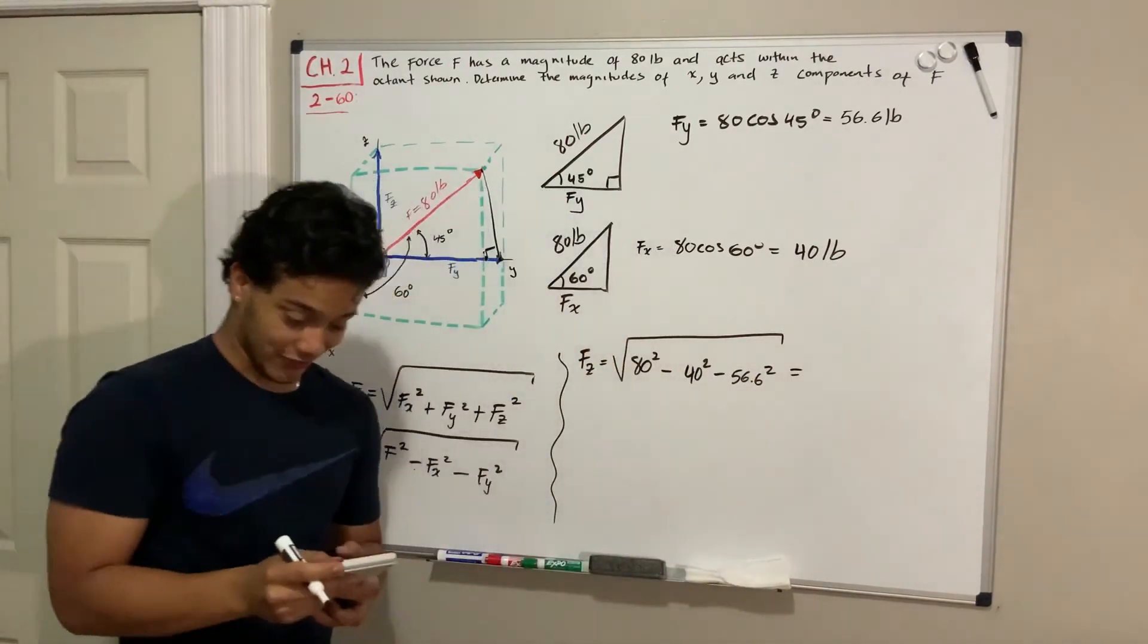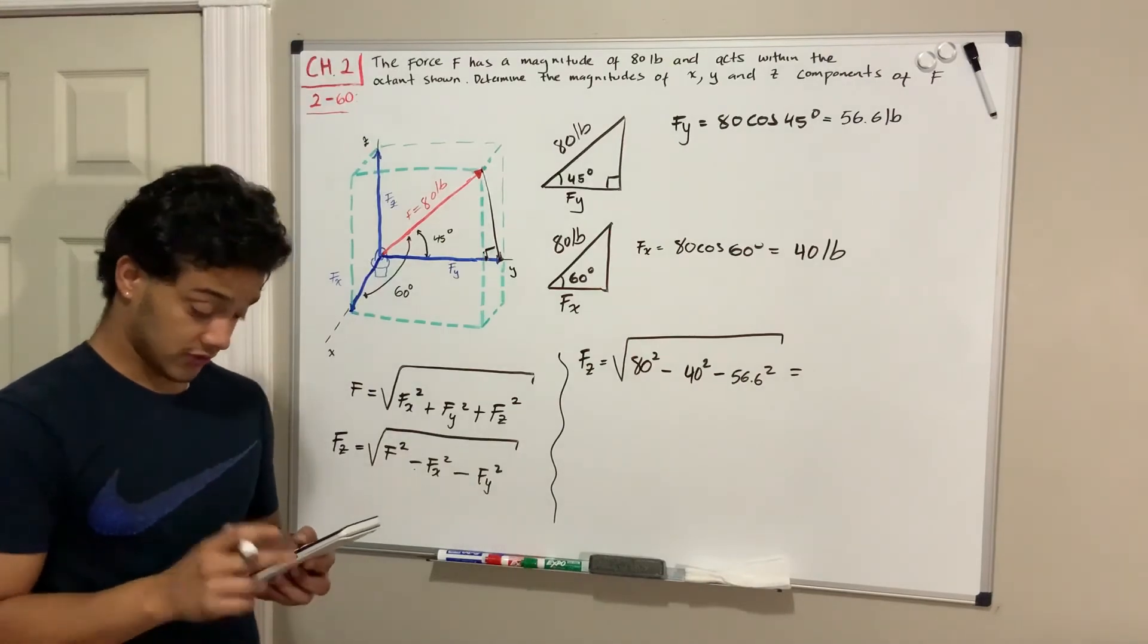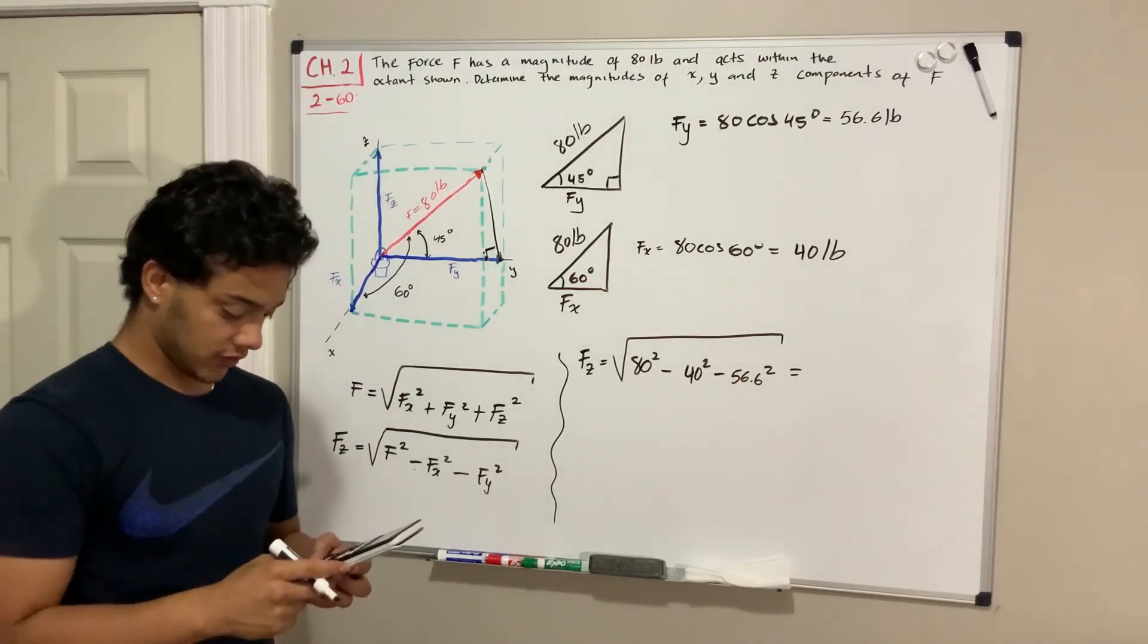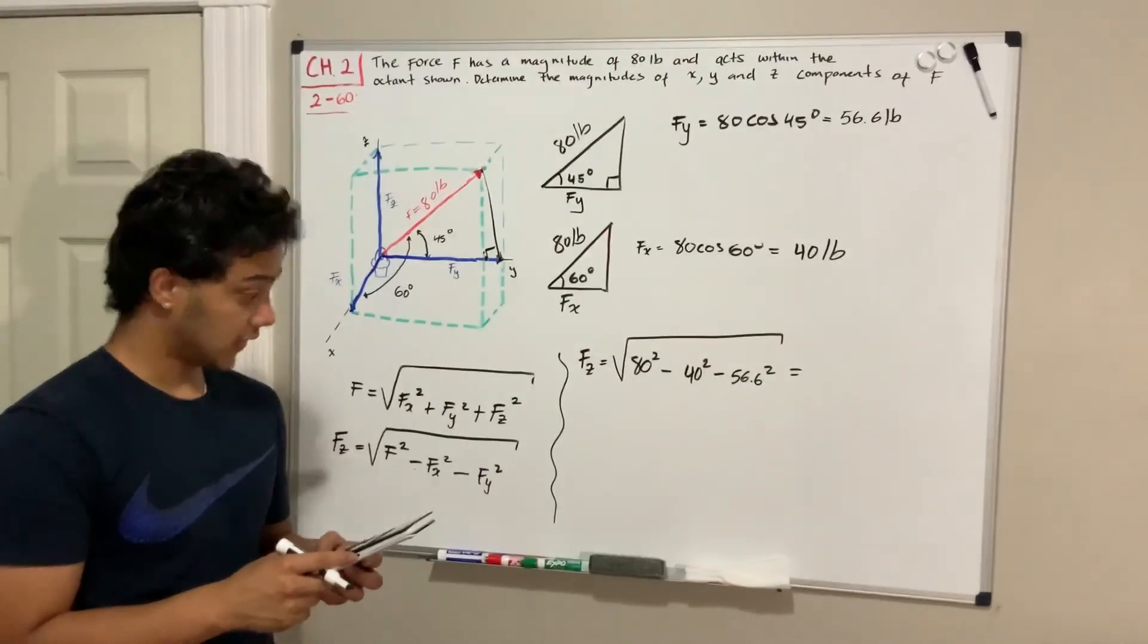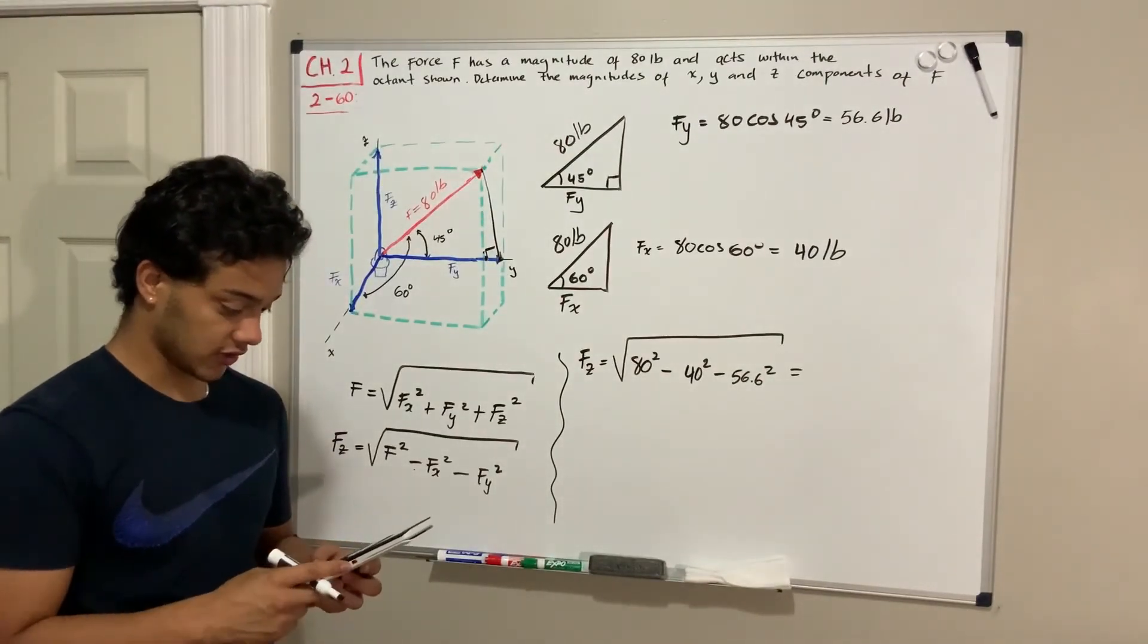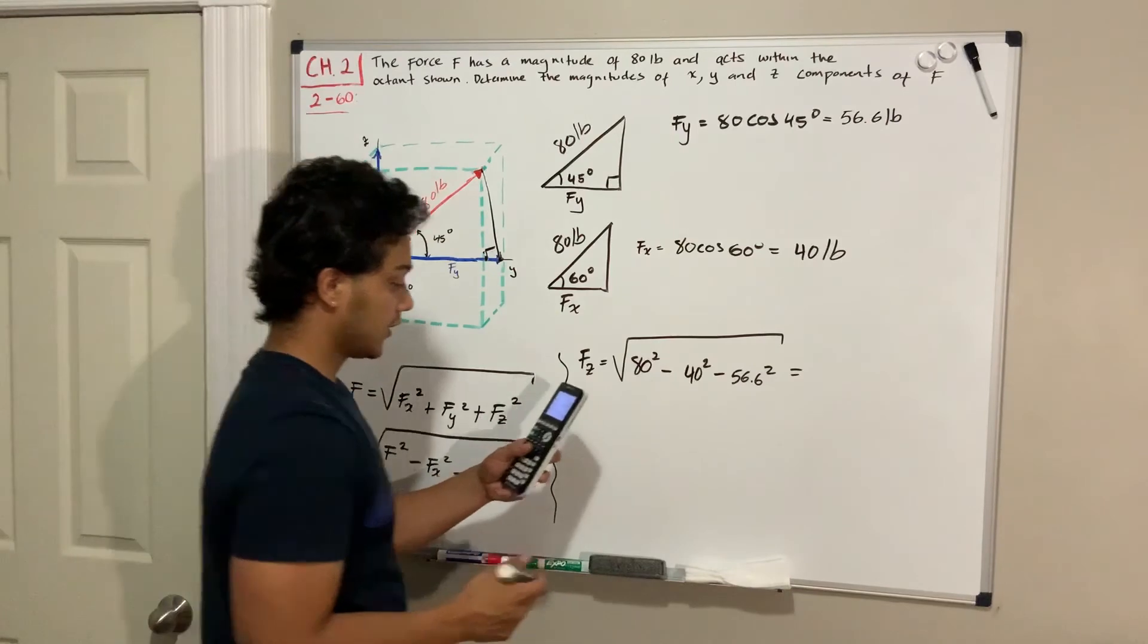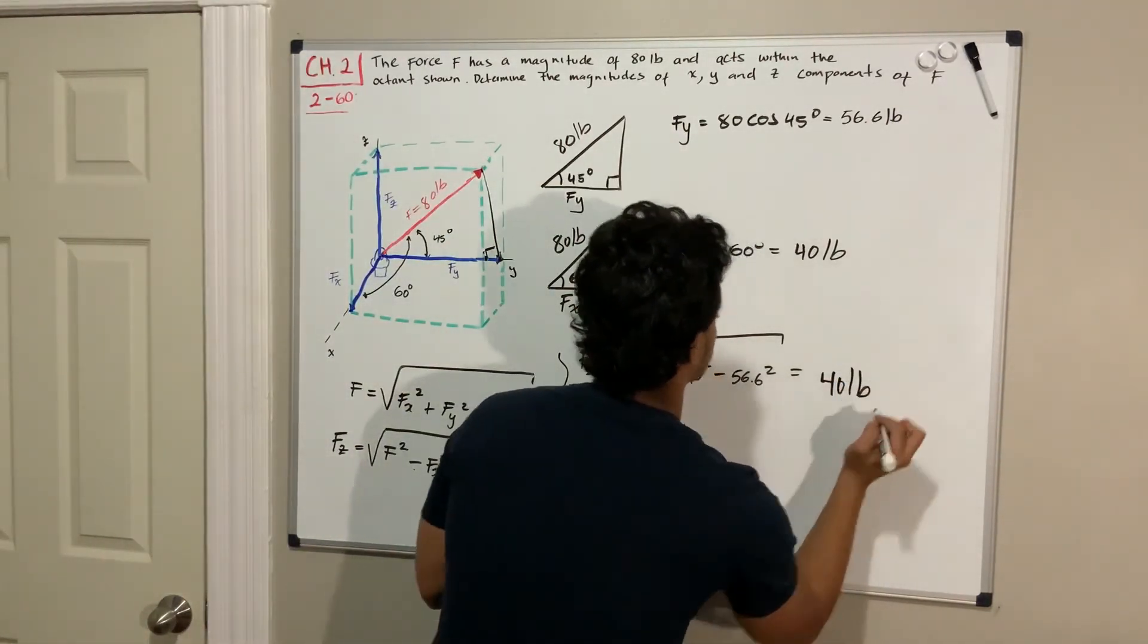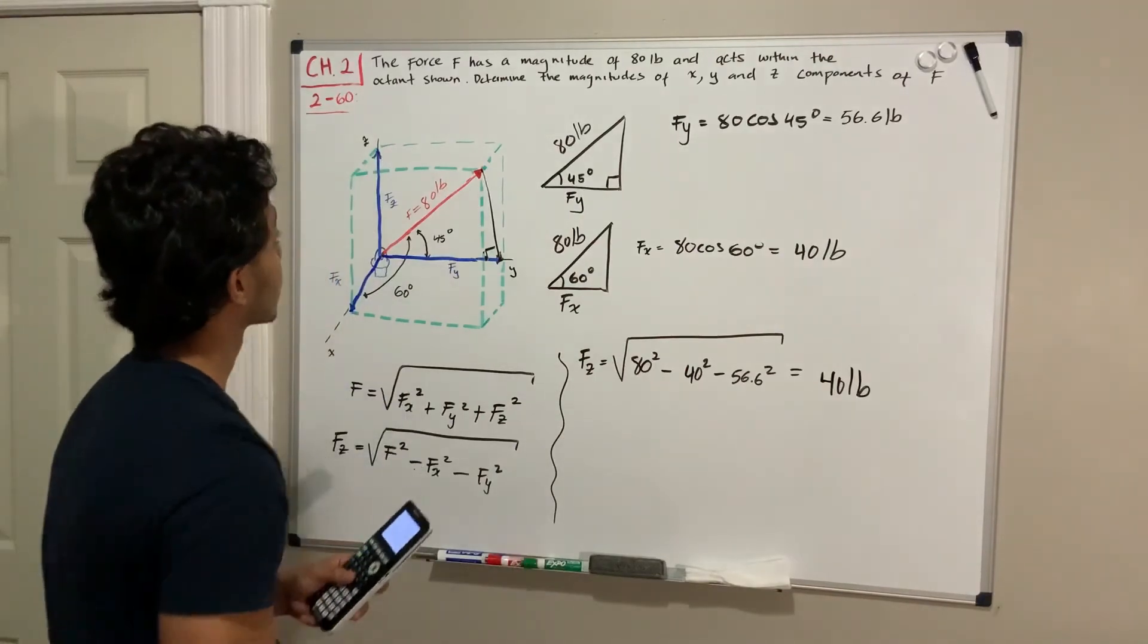Thank God we have our calculator, so we can do this in one step. We've got 80 squared minus 40 squared minus 56.6 squared, and this will give us 40 pounds for the F of Z.